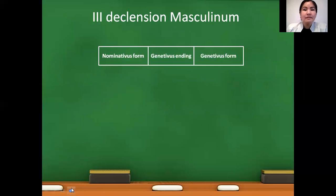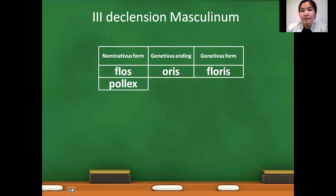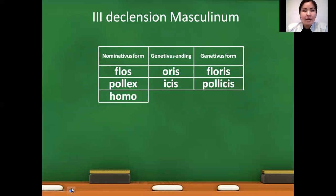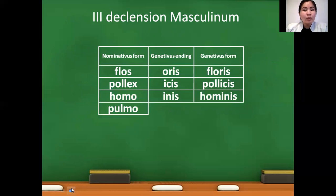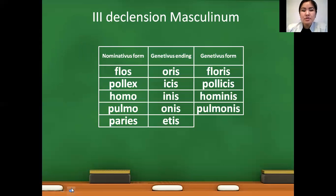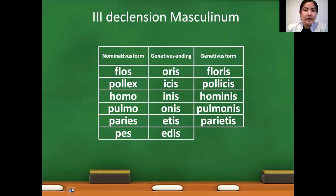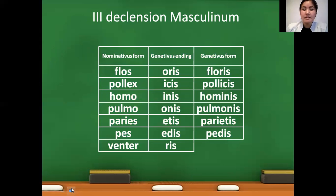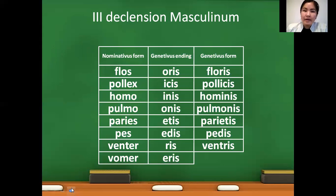In the case of third declension masculine nouns: flos, genitive will be floris; pollex, the x changes to icis, so pollicis; homo becomes hominis; pulmo becomes pulmonis. Paries uses ending -etis because of the even number of letters — parietis. Pes uses ending -edis because of the odd number of letters — pedis. Venter uses ending -tris — ventris. Vomer uses -eris — vomeris.